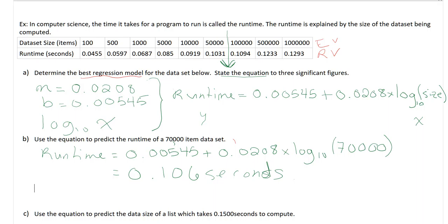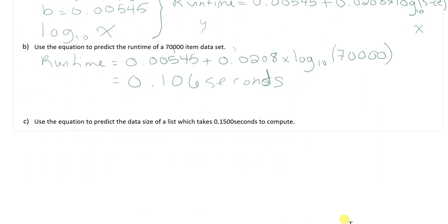Again, that is right in between those two values, so I think I'm on the right track. Always do that quick mental check. Okay. Now the second part, okay, we're asked to use the equation to predict the data size of a list which takes 0.1500 seconds to compute. Okay. So in this case, working backwards, I have the run time. I need to figure out the equation. So, in this case, the run time is 0.1500. So just filling out the equation. Okay. Again, to solve this equation here means you need to use logarithms to solve. Most of us are uncomfortable with that, so let's just use the CAS to solve.